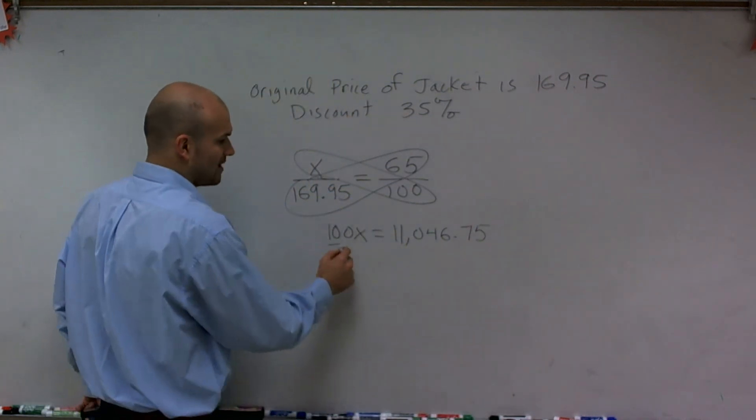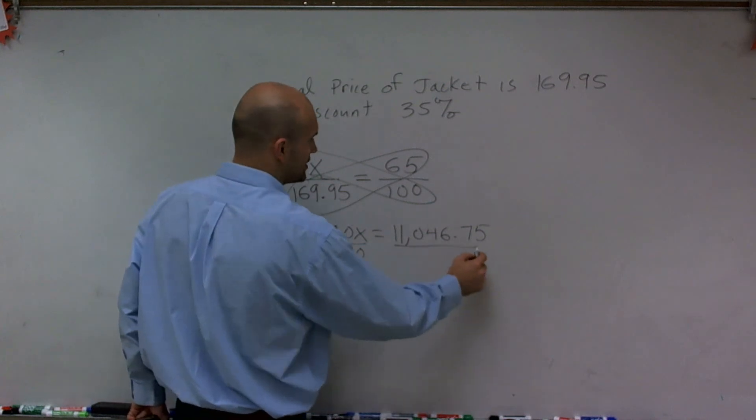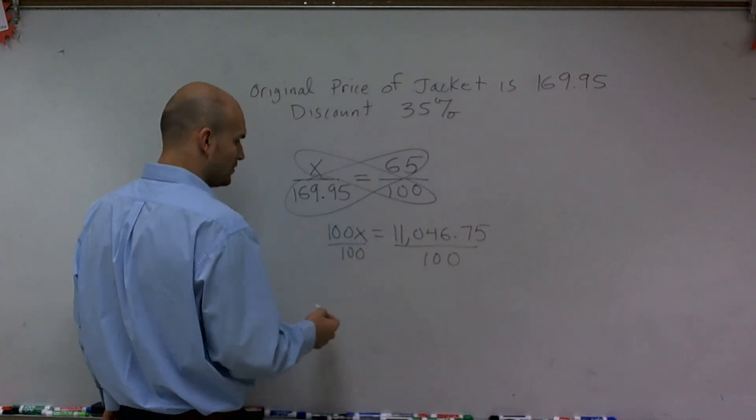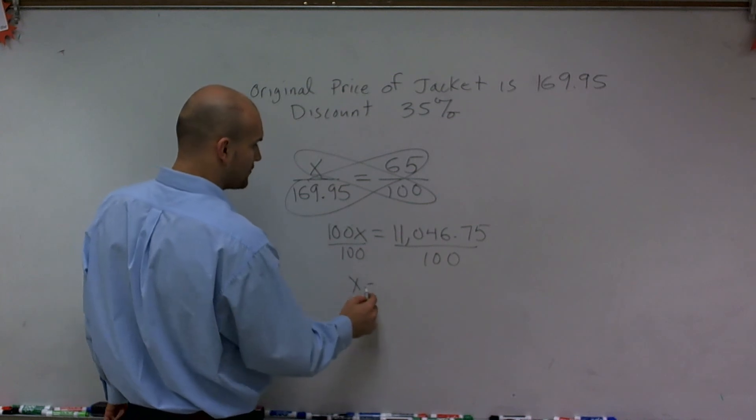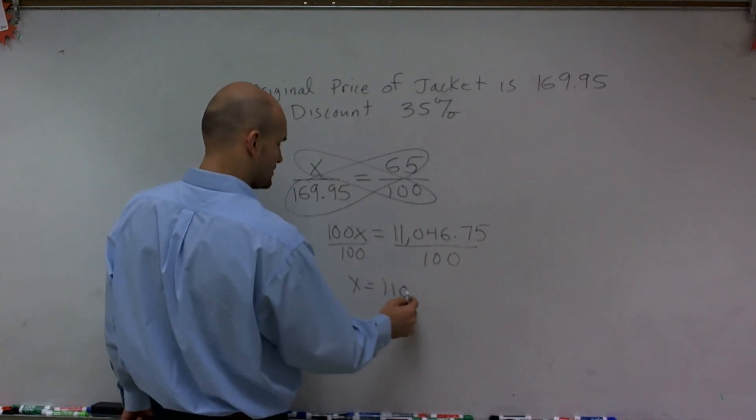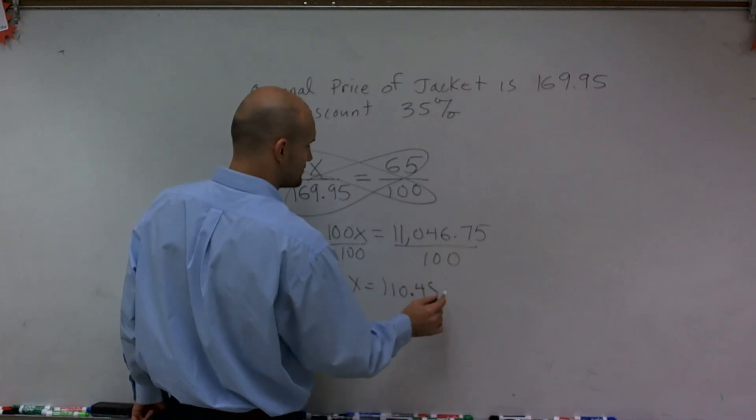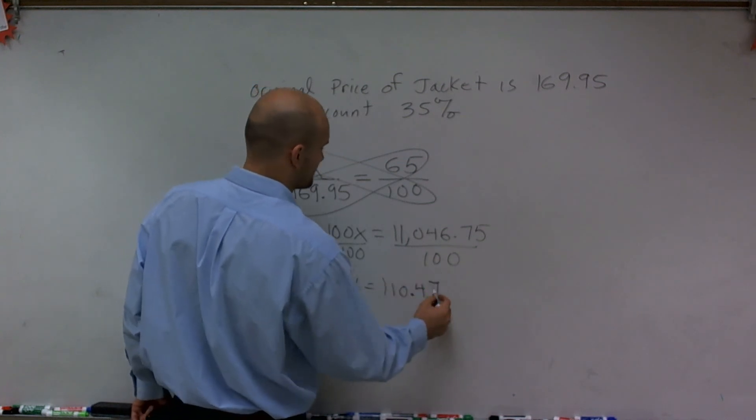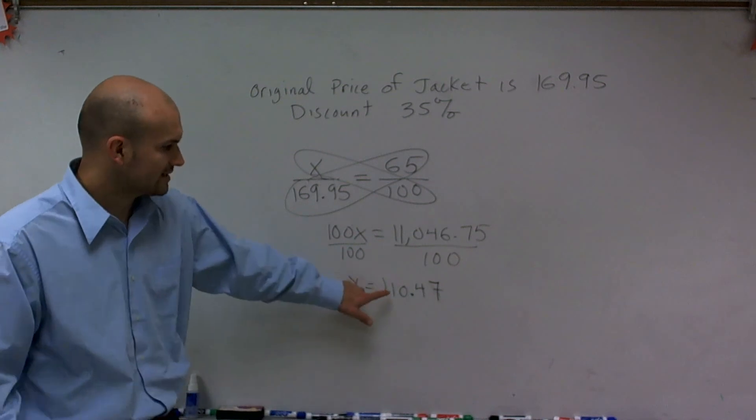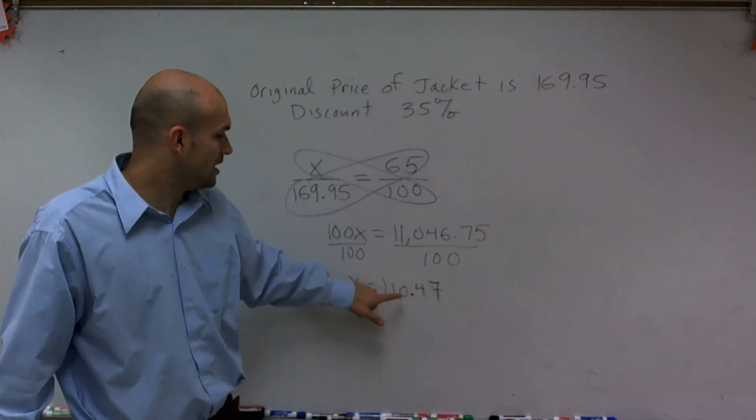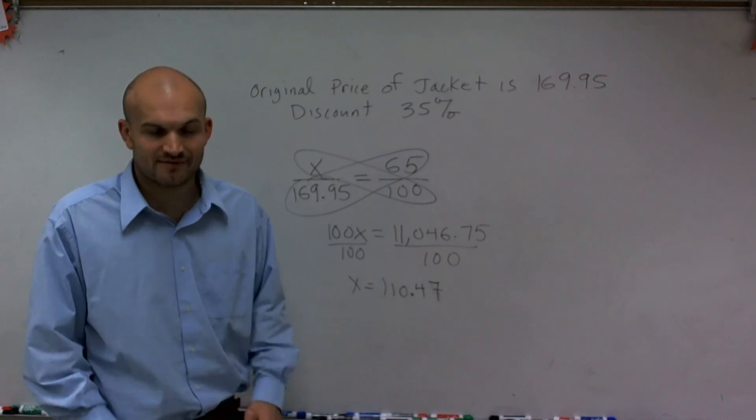So now what I'm going to do to solve for x is divide by 100. And when divided by 100, that means I'm just going to move my decimal point over two spots. So therefore, x equals $110.47. So therefore, at a discounted price, my new jacket is going to be $110.47.